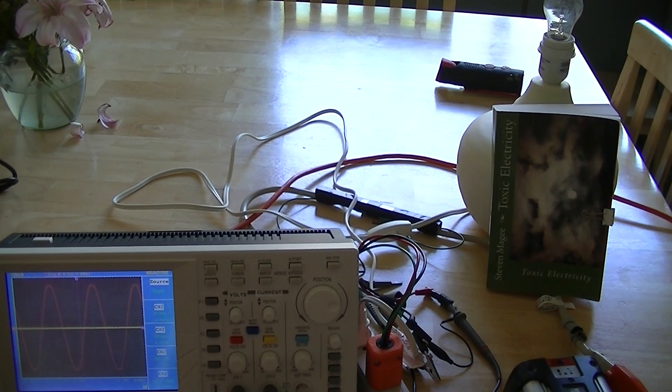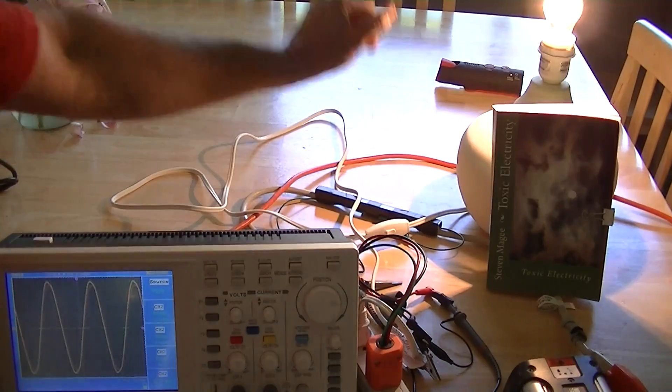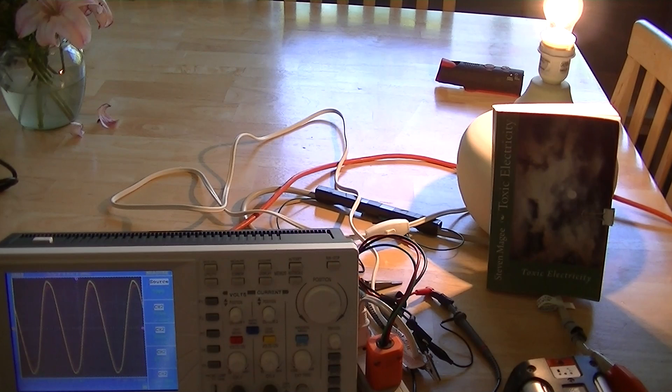We're going to switch on the light to put some current on the system. This is a resistive load, a 60-watt light bulb. As you can see, we have what looks like one waveform but is really two waveforms - a red waveform showing the voltage and a yellow waveform showing the current, almost identical.